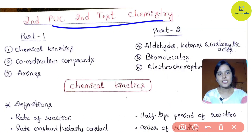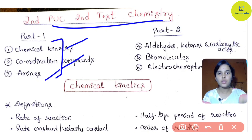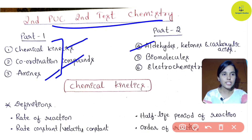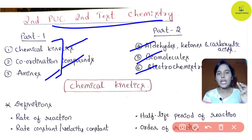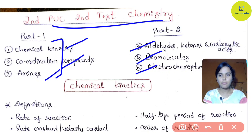Now for the second PUC second test chemistry subject syllabus: according to comments, Chemical Kinetics, Coordination Compounds, and Amines are the three chapters in Part 1 - this is a Part 1 video. Part 2 will cover Aldehydes and Ketones, Carboxylic acids, Biomolecules, and Electrochemistry. So these six chapters are covered across two videos for the second test.